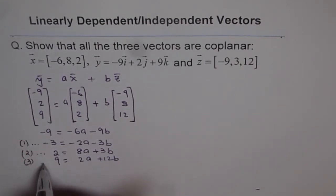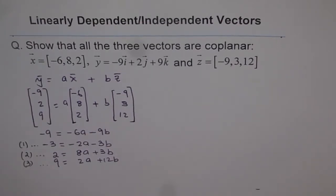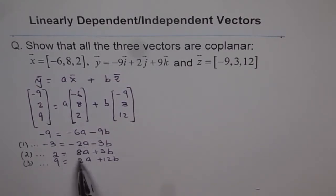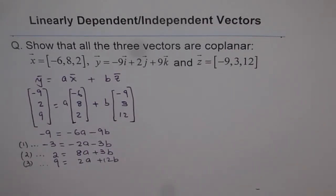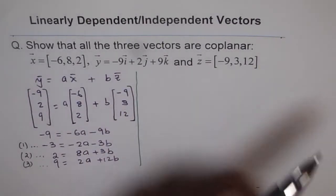So we have three equations and two variables. So we can find the variables using these equations. Now, if you observe equation 1 and 3, we have minus 2a plus 2a. So adding them will eliminate a. So let's solve it.